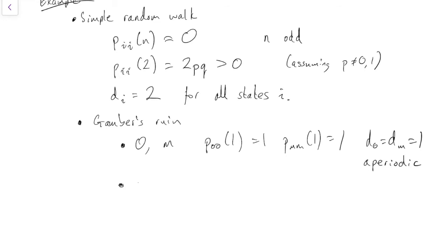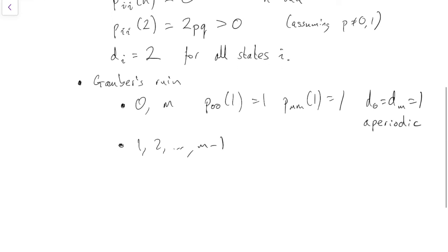On the other hand, for all the other states 1, 2, ..., m-1, they're all like the simple random walk — those states are flitting between odd and even, odd and even. So those have period 2 and are periodic. So in the gambler's ruin, those absorbing states are aperiodic, but the non-absorbing states are periodic with period 2.